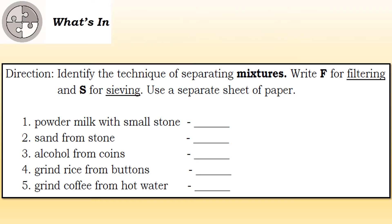I will be testing your ability to identify the technique of separating mixtures. Write F for filtering and S for sieving, using a separate sheet of paper. Number one: Powder milk with small stone. Number two: Sand from stone. Number three: Alcohol from coins. Number four: Ground rice from buttons. Number five: Ground coffee from hot water. Remember the difference between filtering and sieving.